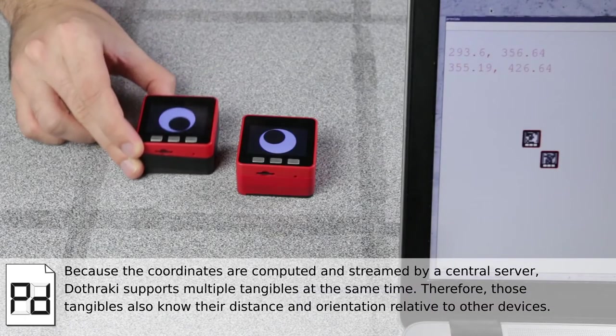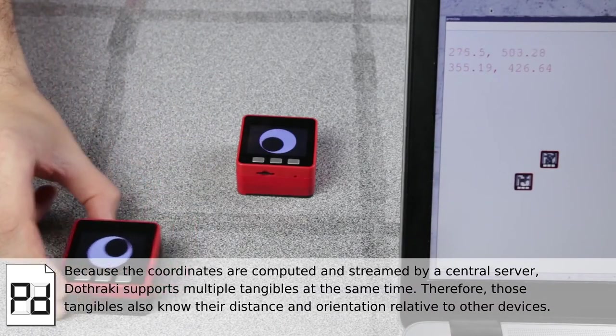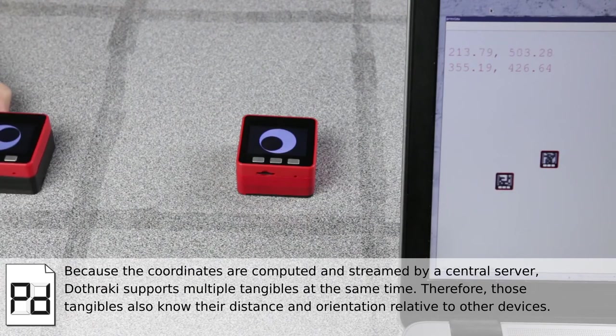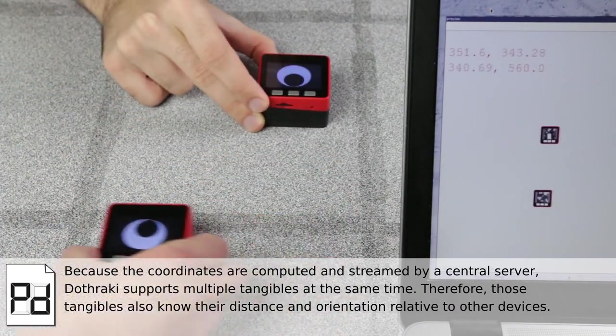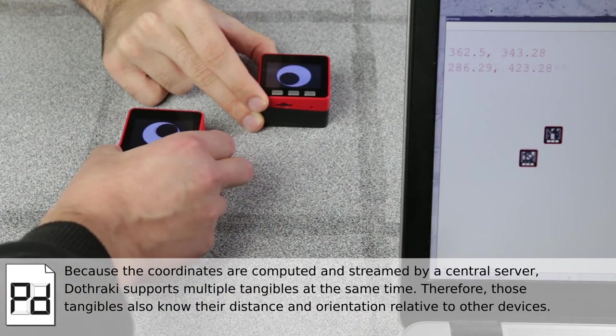Because the coordinates are computed and streamed by a central server, DOTRAKI supports multiple tangibles at the same time. Therefore, those tangibles also know their distance and orientation relative to other devices.